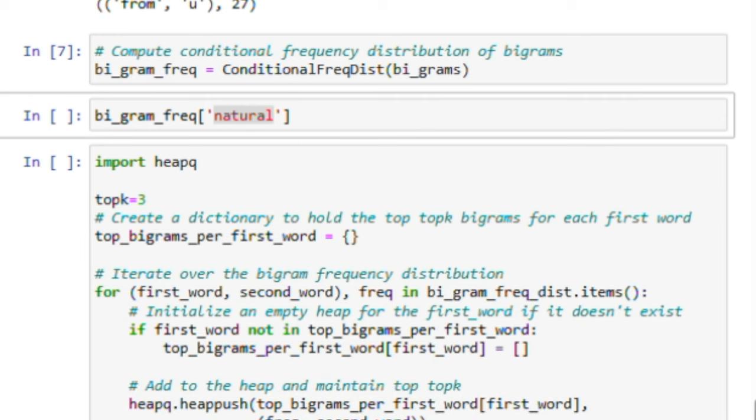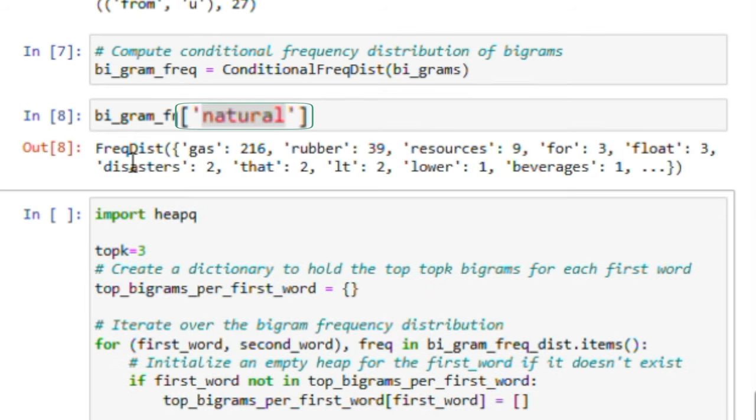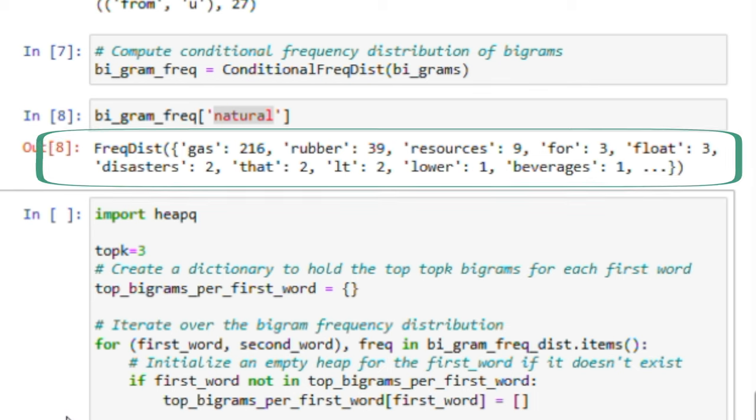As an example, we check what the bigrams of the word natural are. So, natural gas is a bigram that appears 216 times in the data. Natural rubber is another bigram that appears 39 times in the text documents in the data folder. All the bigrams whose first word is natural are here.